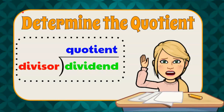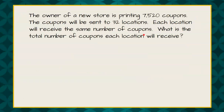Hi, welcome to the Magic of Math, where today we're going to solve a problem where we are asked to determine the quotient. The owner of a new store is printing 7,520 coupons. The coupons will be sent to 32 locations. Each location will receive the same number of coupons. What is the total number of coupons each location will receive?